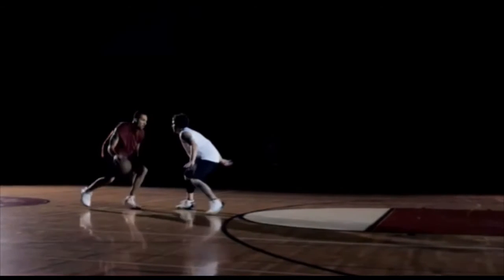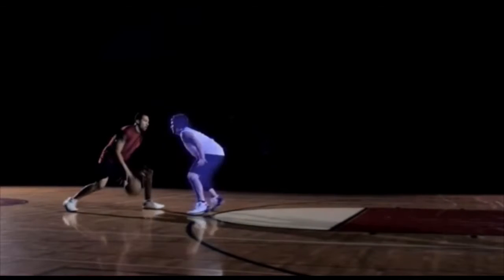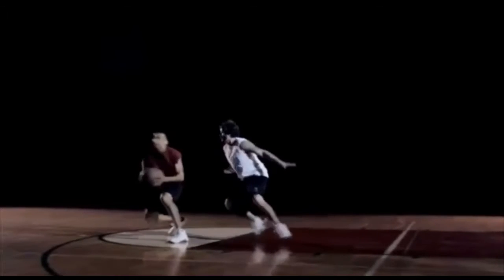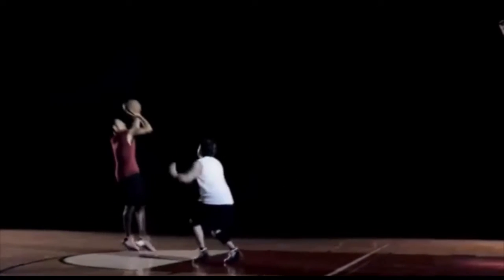The cortex integrates sensory information with thoughts and memories. For example, if you are on offense, you use sensory information to avoid the opponent. If you are on defense, you use that same sensory information to disrupt your opponent's movements. Your cortex is making decisions based on the sensory information it's receiving, and your past experiences with these situations, which are stored in memory.